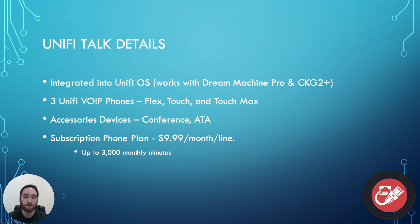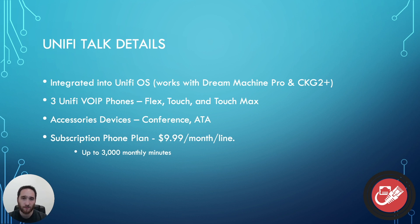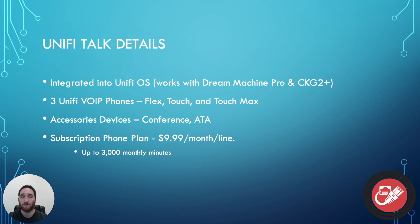The coolest part, in my opinion, is the subscription phone plan. Before this, Unify's voice-over-IP service didn't really make a lot of sense to me because you could only manage the devices. But now they're offering a phone plan, which is awesome. It's $9.99 per month per line, and each line gets up to 3,000 monthly minutes, which pretty much shows it's aimed at small businesses — and you know I'm all about small business.